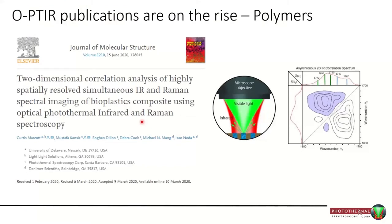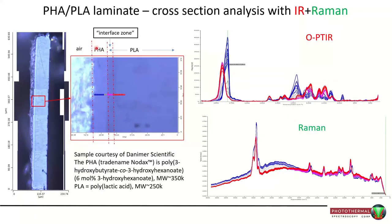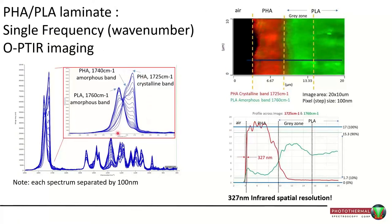Starting with a bioplastics application with Curtis Marcott and the inventor of Nodax: we used infrared and Raman simultaneously to measure a cross-section of PHA, a biodegradable polymer, and PLA. We did line profiles at 100 nanometer steps, giving us two simultaneous data channels — OPTIR and Raman. Even with 100 nm separation, we can see chemistry changing across the interface in the infrared. Single-frequency images at 725 and 1760 cm⁻¹ give nice images, and the sharpness of edge profiles demonstrates the excellent spatial resolution.